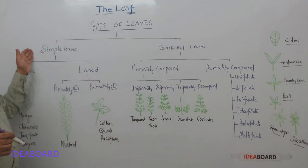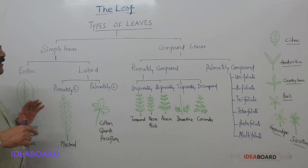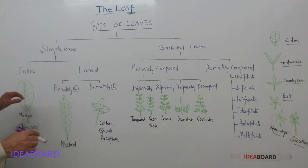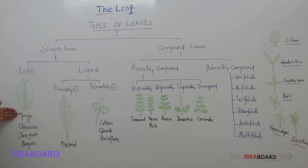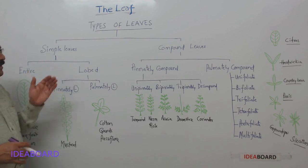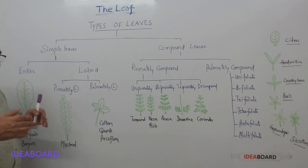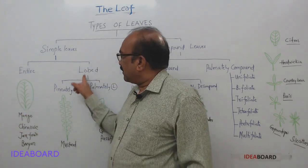A leaf without leaflets is a simple leaf, and a leaf with leaflets is called a compound leaf. Within simple leaves, if the leaf is not at all dissected, it is called an entire leaf. Examples of entire leaves include mango, china rose, jackfruit, banyan, and peepal tree.